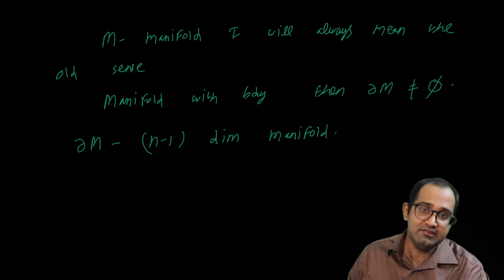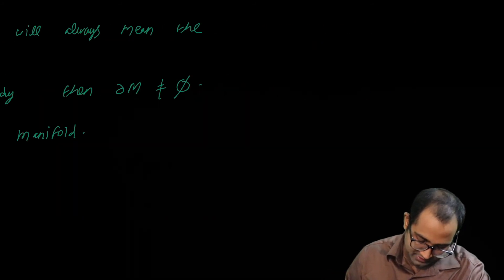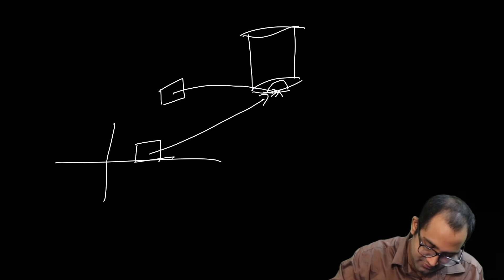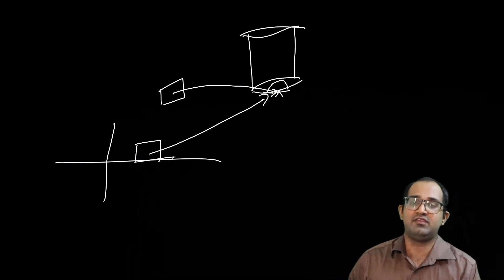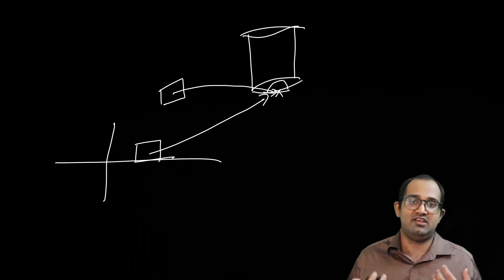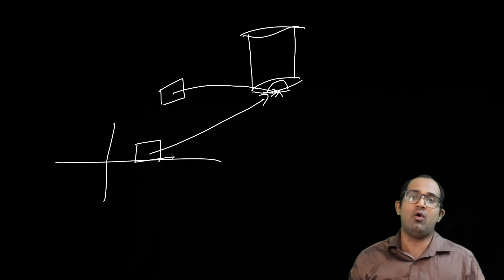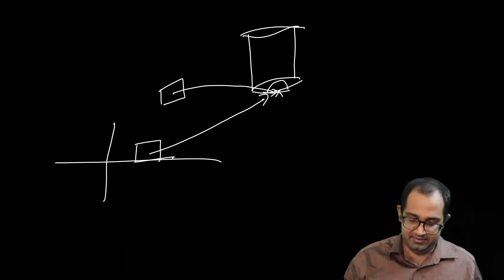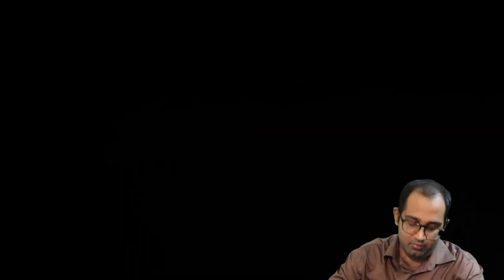Now let us move on further and define the pivotal notion of tangent space. If you take a point P on this manifold with boundary, and if that point happens to be in the image of a local parametrization where that point comes from an interior point considered as a subset of Rn, then you can define the tangent space in the usual way: just look at the parametrization, take the derivative, and push forward the whole vector space Rn. That image is called the tangent space. The same definition holds true for manifolds with boundary.